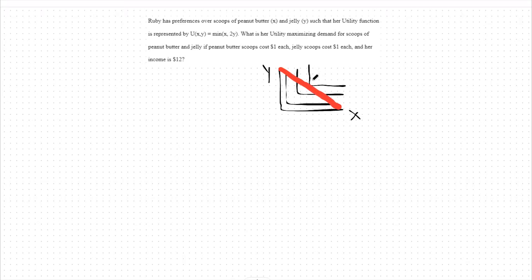Notice how our budget constraint will always hit our highest indifference curve at this perfect point. The perfect point of a perfect complement's utility function is the point where we get the same amount of utility from both goods.